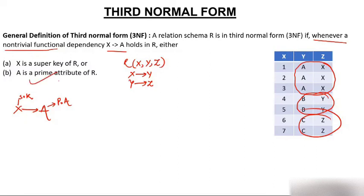Checking using the general definition: the key is X. For FD X→Y, X is a super key, so this FD satisfies 3NF. For FD Y→Z, Y is not a super key and Z is not a prime attribute, so this FD violates 3NF. Therefore this table is not in 3NF because of the FD Y→Z.